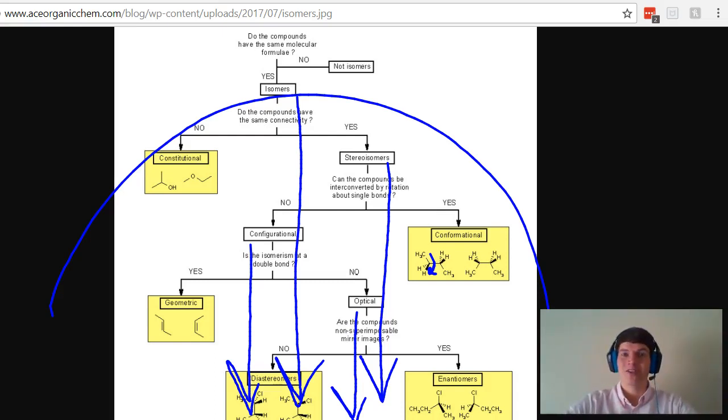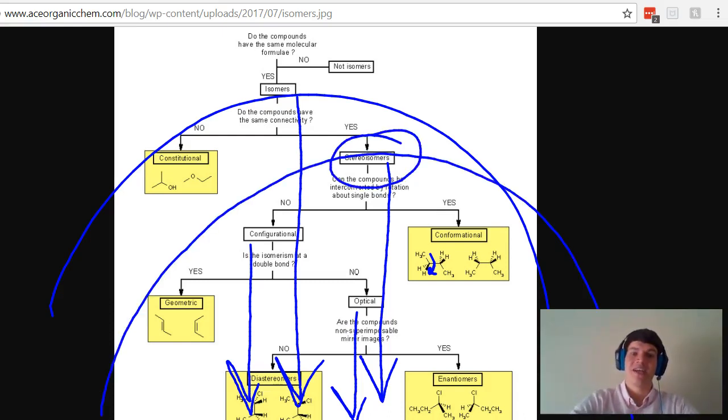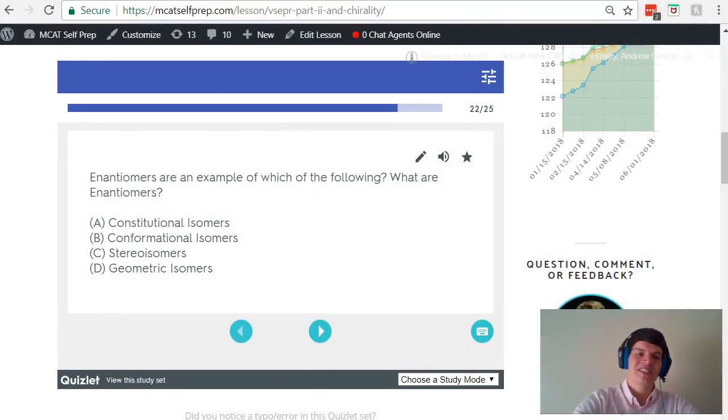Therefore, in regards to the question at hand, what are enantiomers? They would fall under the umbrella terms of stereoisomers. For this reason, answer choice C is the correct answer.